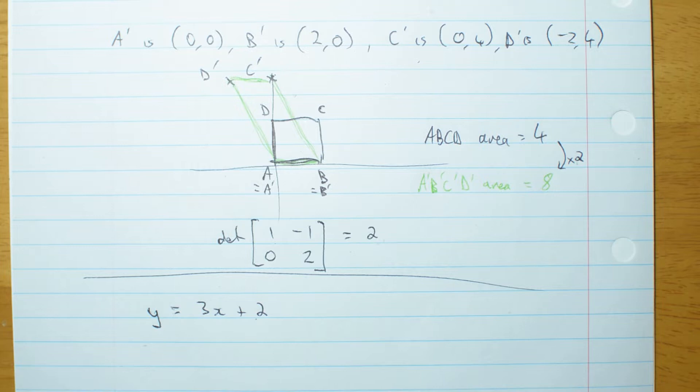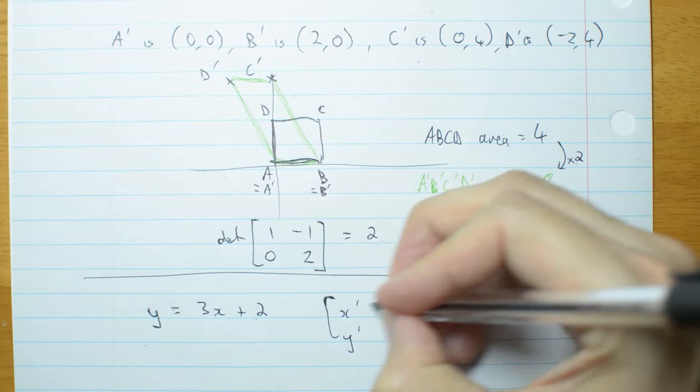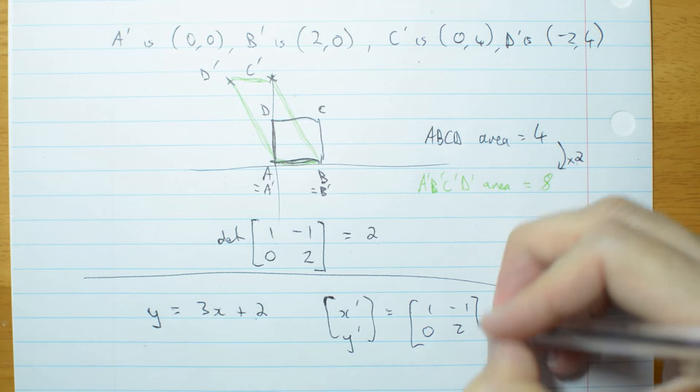Well we're going to do it the same way we did one before. A normal equation says x dashed, y dashed is my matrix, transformation matrix, times x, y.